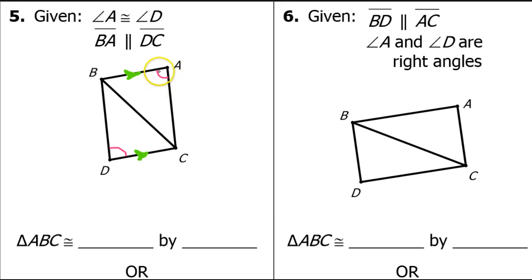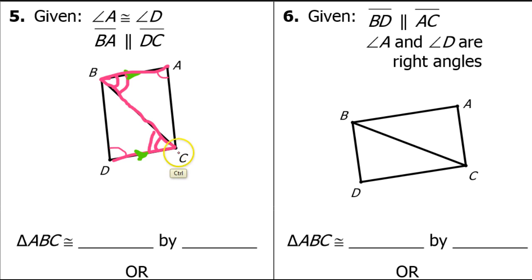Sometimes parallel sides form part of a Z. For example, can you see that I could draw a Z like this? It's a backward Z, but it still counts. When you can draw a Z out of parallel lines, the alternate interior angles at the corners of the Z are going to be congruent. So we can go ahead and mark those. In addition to that, the shared side is congruent for both triangles by the reflexive property.